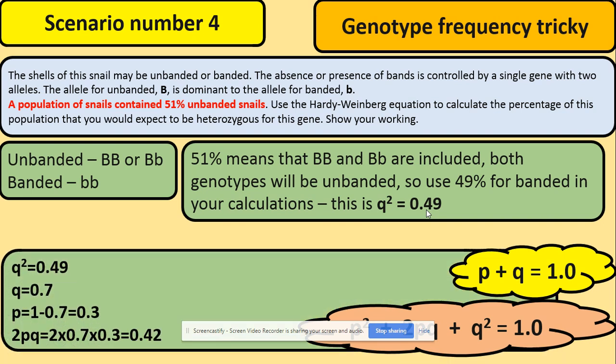So q squared is 49%. We square root this to work out q which is 0.7. Take away from one to work out p which is 0.3, and then we can work out the expected heterozygous frequency by using 2pq.